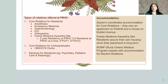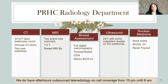Queens coordinates the accommodation for co-rotations and owns an apartment on Park Hill Street. Family medicine Kawartha site residents secure their own housing since placement is longer term. The rural medical program assists with accommodation for elective rotations if you consider doing an elective with us.